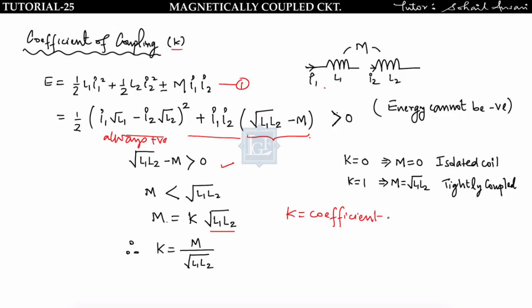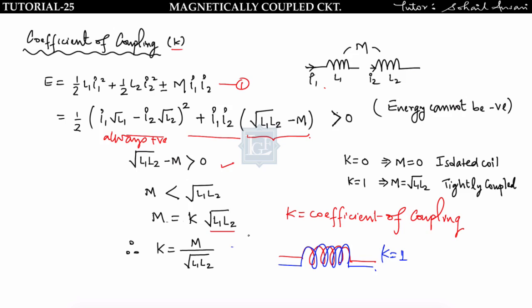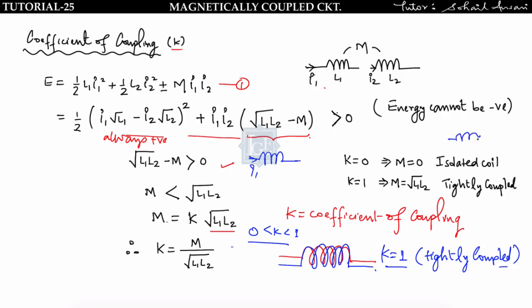Practically, the coefficient of coupling k lies from 0 to 1. If k = 1, the coils are tightly coupled — all the flux produced in coil one will aid or oppose the flux produced in coil two. If k = 0, there is no mutual flux between the two coils, meaning the coils are isolated from each other.